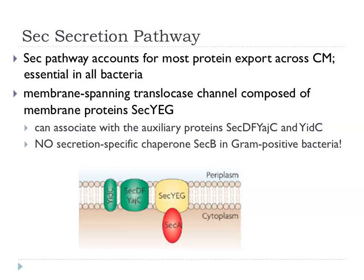The SEC pathway is the predominant pathway, accounting for most protein export across the cytoplasmic membrane. It's essential in all bacteria, gram-positives as well as gram-negatives. We've already described this membrane-spanning translocase channel with proteins SecYEG and accessory proteins including SecDF/YajC. The main difference in gram-positives is that there is no SecB — the chaperone found in gram-negative bacteria is absent in gram-positive systems.